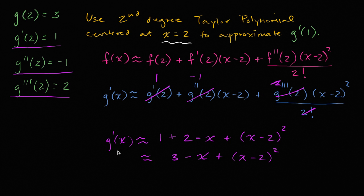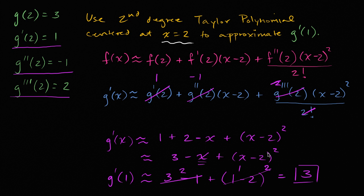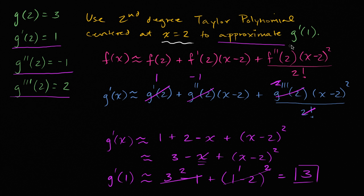Now I can evaluate it. To approximate g prime of one, I put x equals one in everywhere: three minus one, plus one minus two squared. Three minus one is two, and one minus two is negative one, which squared gives positive one. So two plus one equals three. This is our approximation for g prime of one. We found the second degree Taylor series approximation for g prime of x centered around x equals two, then evaluated that approximation at x equals one to approximate g prime of one.